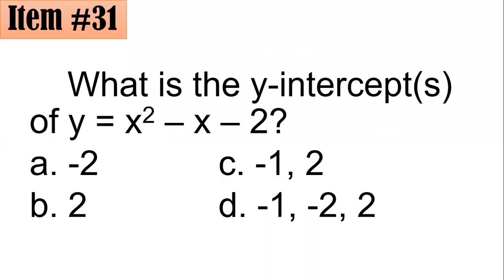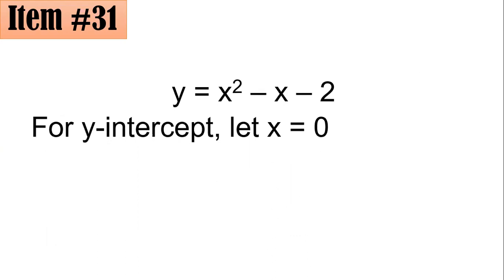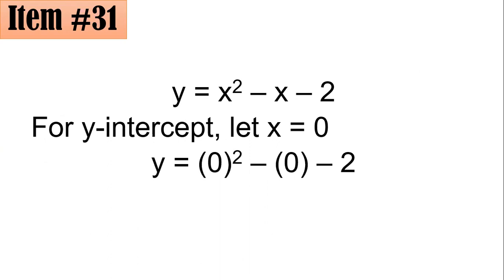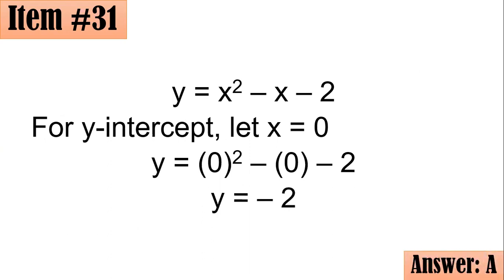Item 31: What is the y-intercept of y equals x squared minus x minus 2? The y-intercept is the value of y when x is 0. Let x equal 0, then y equals 0 squared minus 0 minus 2, so y equals negative 2. The answer is letter A.